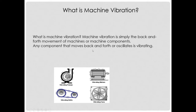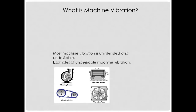Machine vibration is just the back and forth movement of a machine's component. If it's oscillating back and forth, it's vibrating. How fast and how bad it is — that's what we're learning about today. Most machine vibration is unintended and undesirable. We want to try to avoid it at all costs, as it usually leads to irreparable damage.